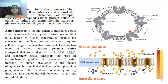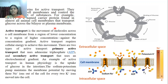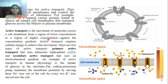The plasma membrane possesses membrane proteins — carrier proteins for active transport. They occur in the cell membrane and control the active transport of substances. For example, the transport of glucose is done by glucose transporters, a carrier protein found in almost all animal cell membranes, which transport glucose across the bilayer. Active transport is defined as the movement of molecules from the region of lower concentration to the region of higher concentration — against the concentration gradient — and requires cellular energy.